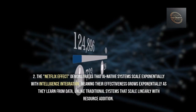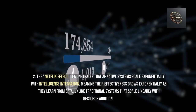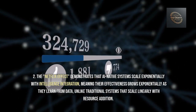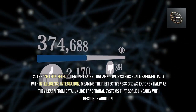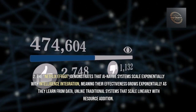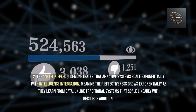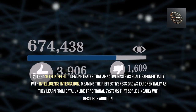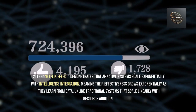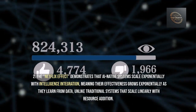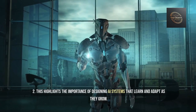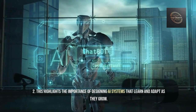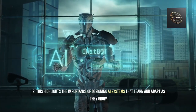Answer 2: The Netflix effect demonstrates that AI Native systems scale exponentially with intelligence integration, meaning their effectiveness grows exponentially as they learn from data, unlike traditional systems that scale linearly with resource addition. This highlights the importance of designing AI systems that learn and adapt as they grow.